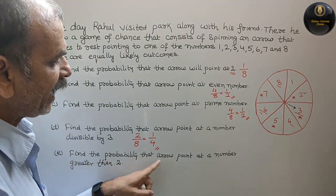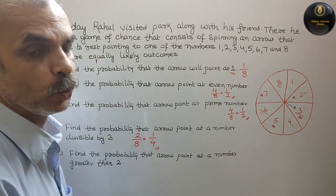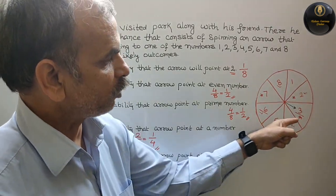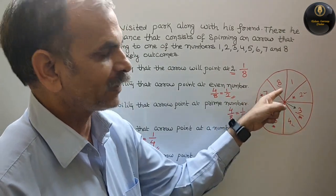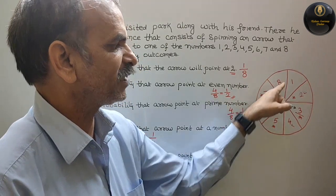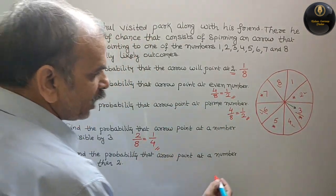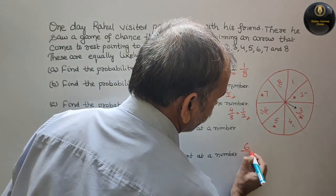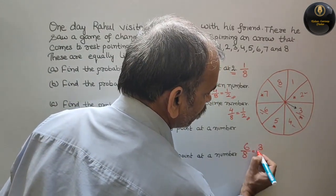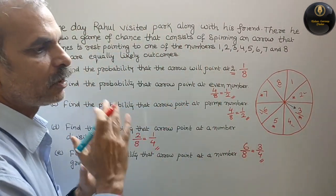Next. Find the probability that arrow points at a number greater than 2. Greater than 2 means starting from 3. That means how many numbers? 1, 2, 3, 4, 5, 6. 6 by 8. So here we will write 6 by 8. Reduce by 2, you will get 3 by 4.